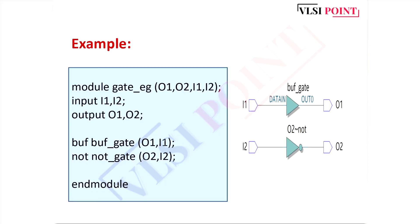In this example, you can see how to write the Verilog code for buffer and not gates. Simply write the gate name which is buff, then the instance name, then output and input. Similarly for not gate: not, then the instance name, then output and input. In this manner we can write the Verilog code for buff/not gates.